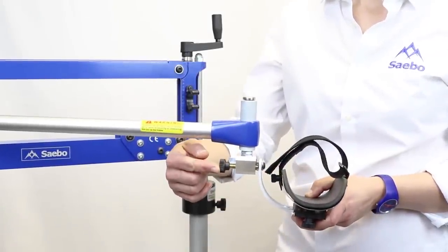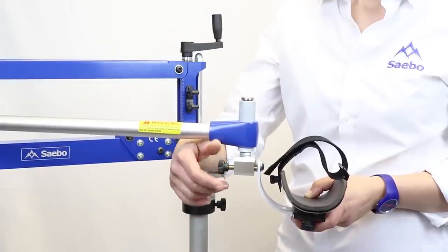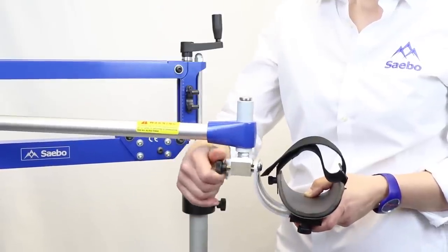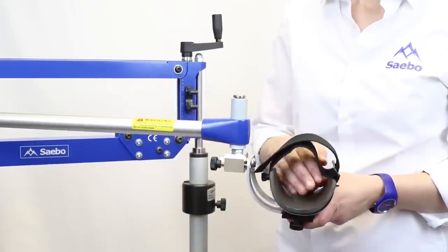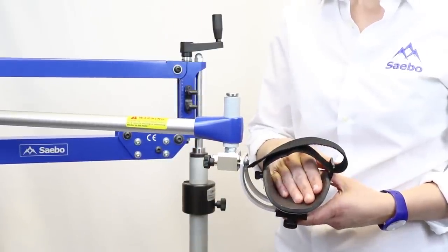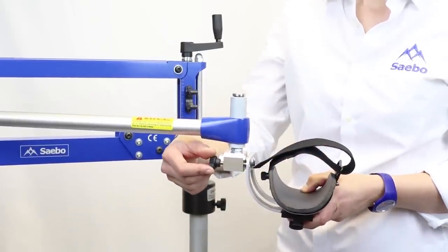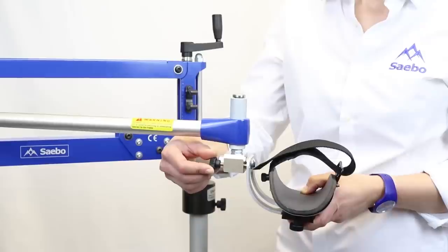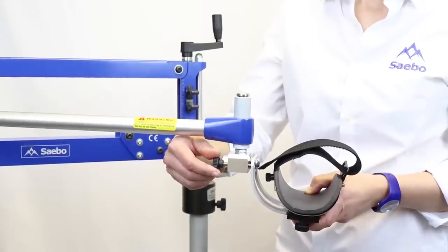This will then concentrate movement proximally around their shoulder. As they improve you can undo this to allow them more movement.